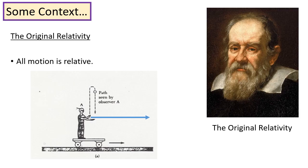Firstly, however, we need a little bit of context. Galileo came up with the original theory of relativity, where he said that all motion is relative. For example, imagine you're travelling along on a vehicle, and you throw a ball in the air, and it goes straight up in the air, and you catch it.